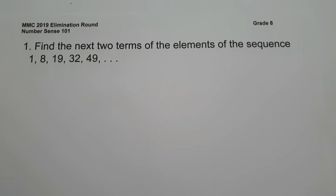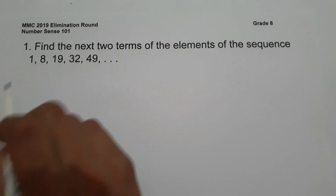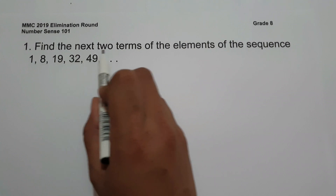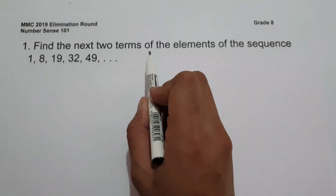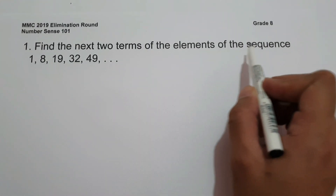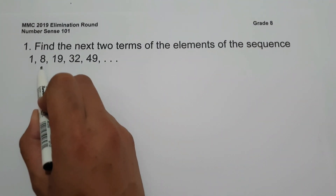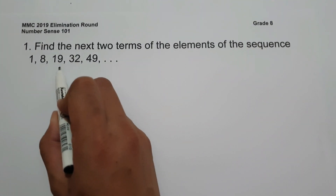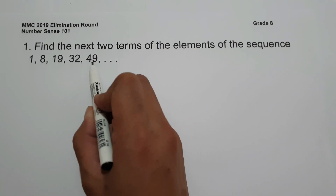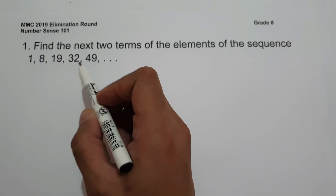On number 1, find the next two terms of the sequence: 1, 8, 19, 32, and 49.